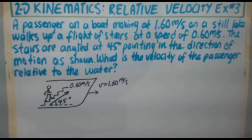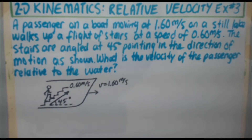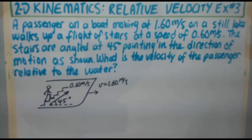Welcome to another two-dimensional kinematics video — Example 3 for relative velocity. A passenger on a boat moving at 1.60 meters per second on a still lake walks up a flight of stairs at a speed of 0.60 meters per second. The stairs are angled at 45 degrees pointing in the direction of motion. What is the velocity of the passenger relative to the water?